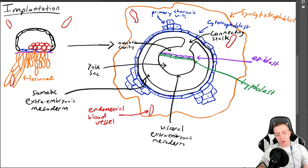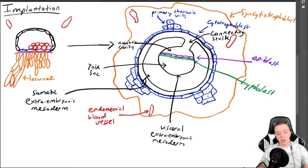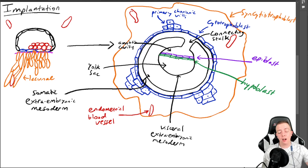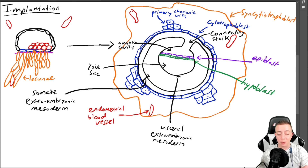Nutrients can diffuse through the connecting stalk to the growing embryo. You have the somatic extra-embryonic mesoderm on the outside, connected to the primary chorionic villi on the trophoblast side. Separating these layers of mesoderm is the chorionic cavity. The inner layer is the visceral extra-embryonic mesoderm — the visceral side is going to become the fetal side of the placenta, and the somatic side will join to become the maternal side of the placenta.